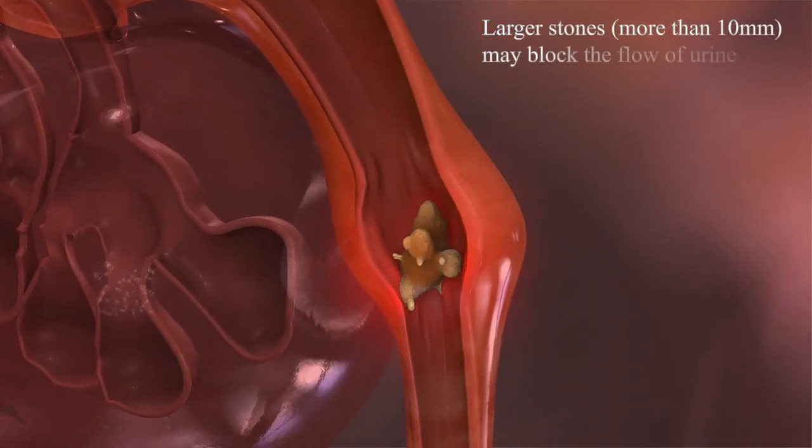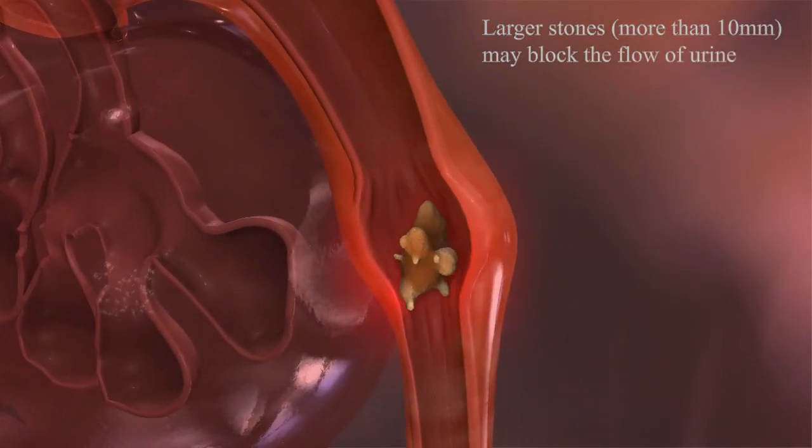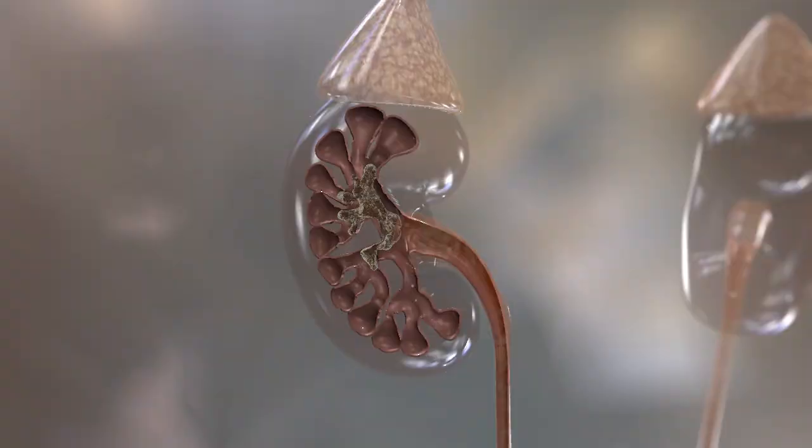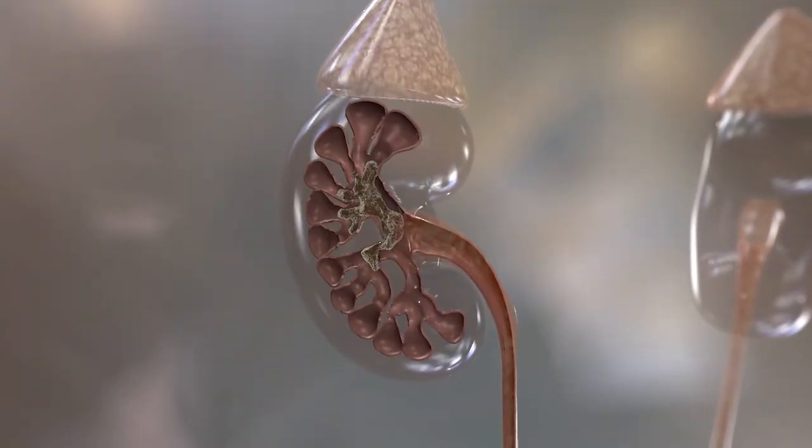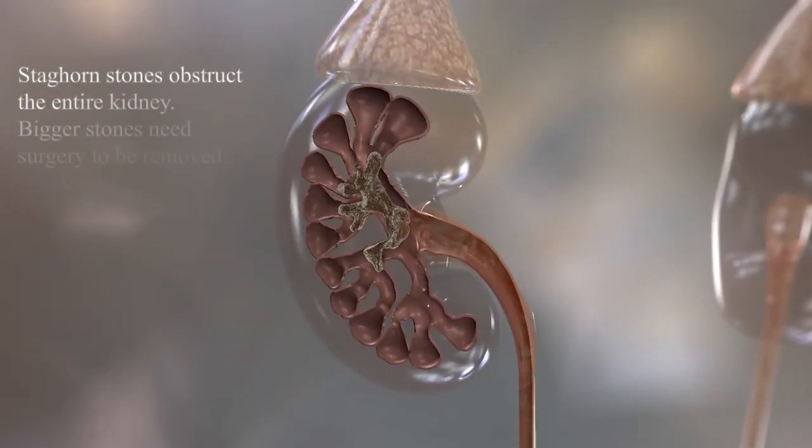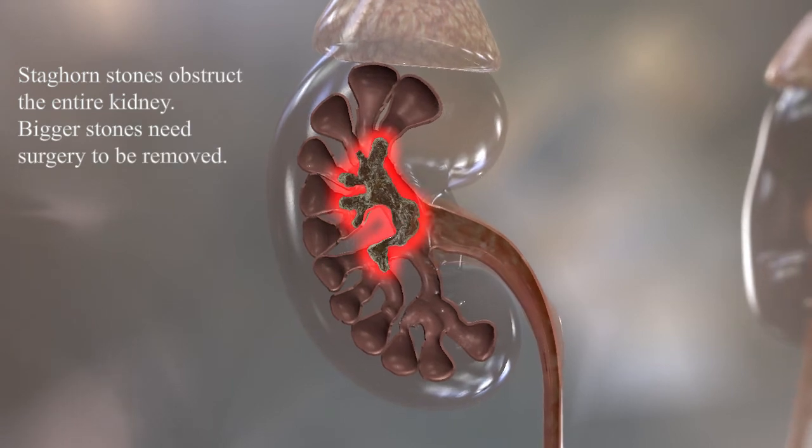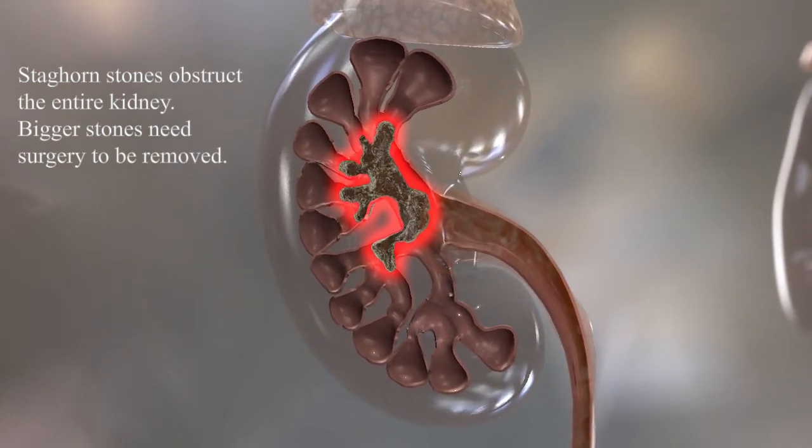Larger stones, more than ten millimeters, may block the flow of urine. Staghorn stones obstruct the entire kidney. Bigger stones need surgery to be removed.